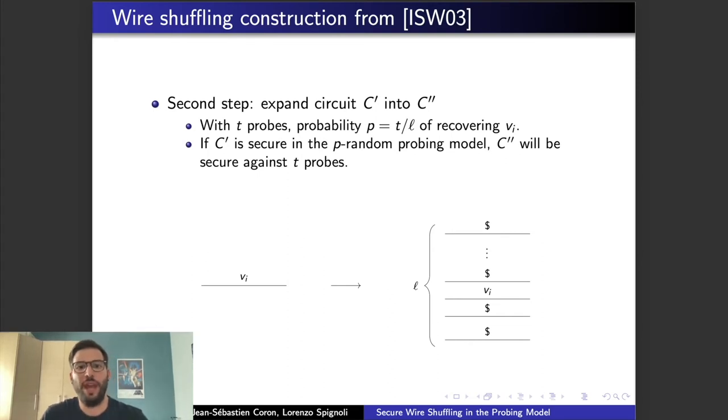So, in this way, with T probes, the probability of the adversary of recovering the signal, the original signal, is of course p equal to T over L. And the proof of the security is based on the fact that if C' is secure in the p random probing model, then C'' will be secure against T probes.